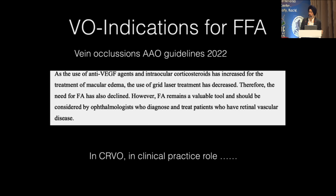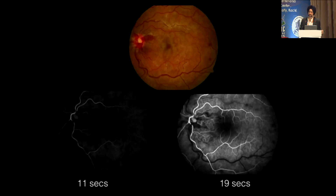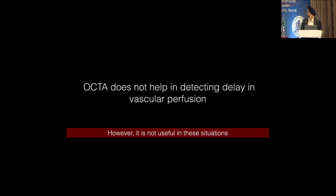Coming to other vascular occlusions — vein occlusions: practically there is no indication for CRVO as such for doing FFA. At best in clinical practice, if you have minimal changes and want to know the time of vein perfusion, you need FFA — because that is the only thing which will tell you the filling time, distinguishing impending CRVO. OCTA cannot do this, so OCTA is not useful in such a situation in CRVO.